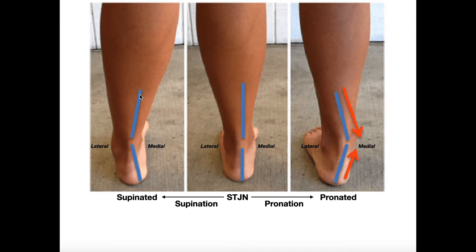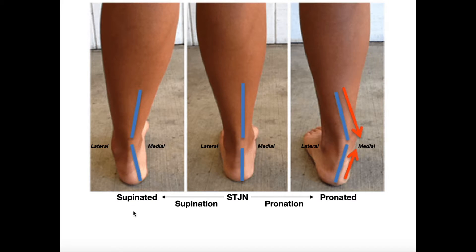When looking at the supinated state versus pronated state of the ankle, notice that those lines we drew earlier are no longer parallel to one another. In fact, if you follow them to where they would intersect in the supinated state, they actually point out a little laterally. So if you're looking at the posterior aspect of somebody's ankle and the ankle seems to be pointed out laterally, that individual is in a supinated state. If we look at the pronated state, following these lines shows they point in medially, so that ankle appears to be pointing in medially — that is in the pronated state.